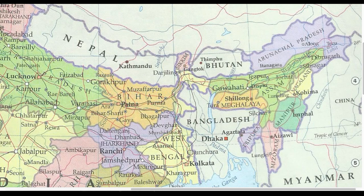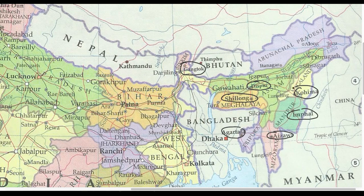Now let's look at the capitals of these states. Sikkim has Gangtok; Assam has Dispur (note: Guwahati is not the capital, Dispur is); Meghalaya has Shillong; Tripura has Agartala; Mizoram has Aizawl; Manipur has Imphal; Nagaland has Kohima; and Arunachal Pradesh has Itanagar. Arranged from north to south: Gangtok, Itanagar, Dispur, Kohima, Shillong, Imphal, Agartala, and Aizawl.